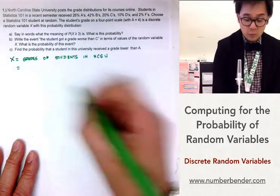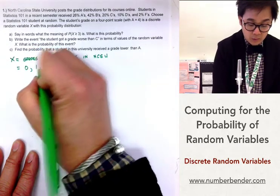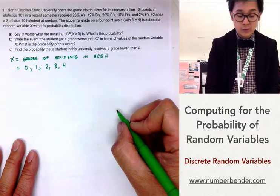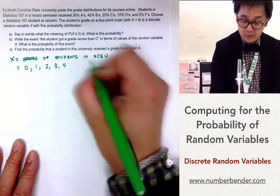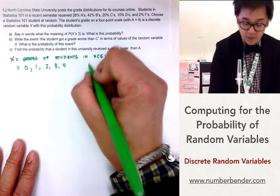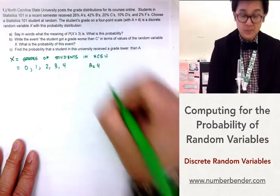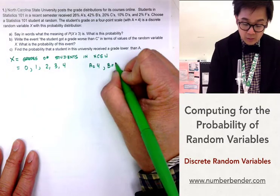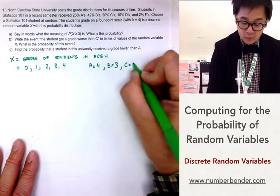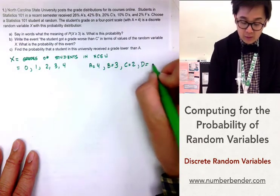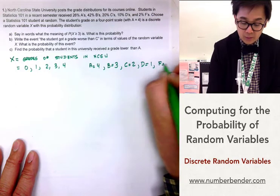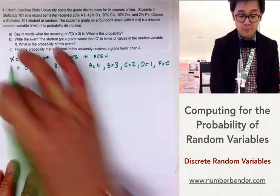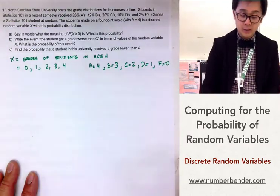The values for x will be 0, 1, 2, 3, and 4. We know this because according to the given values, A is 4, B is 3, a grade of C is 2, D is 1, and F is a grade of 0. This will be the distribution of our random variable.